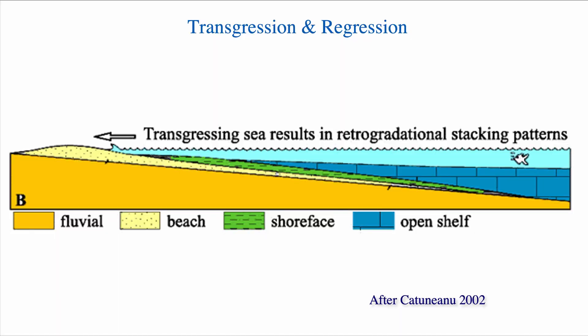Now retrogradational stacking pattern is a bit of a mouthful. What does it mean? It simply means that if you look at Walter's law in the succession of facies, that succession shifts landward. So you can very clearly see here that the beach facies that you found much deeper in the basin in the older sediments, now is much higher on the continent in the younger sediments.